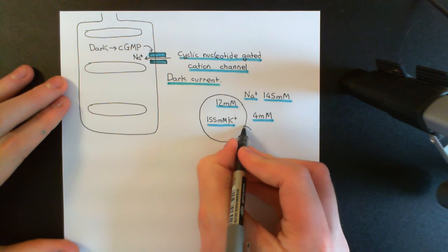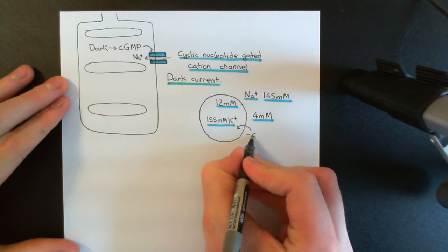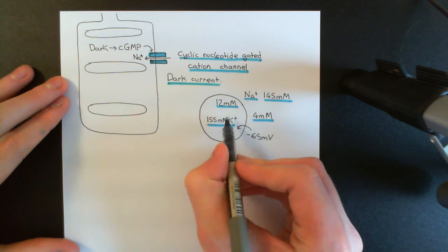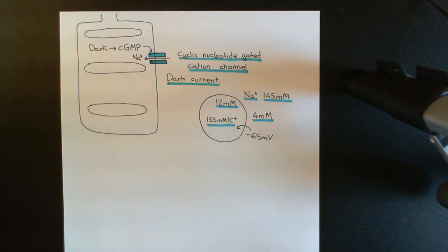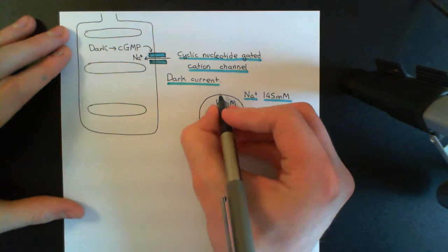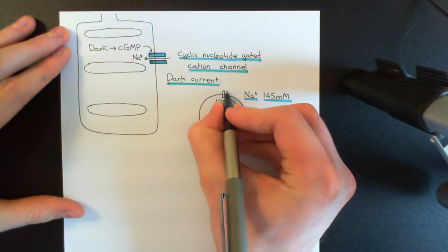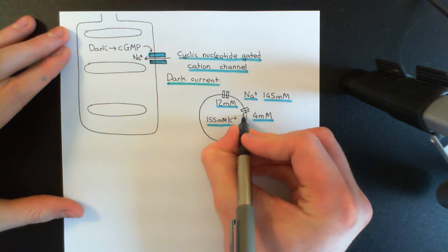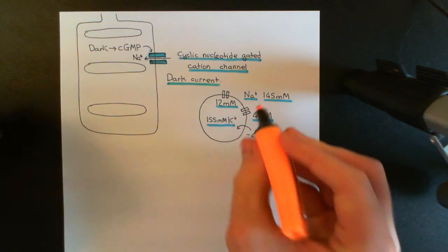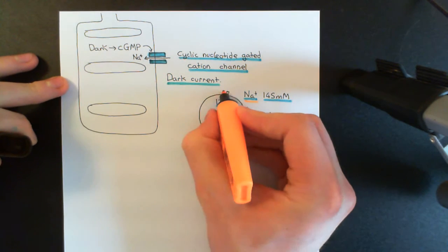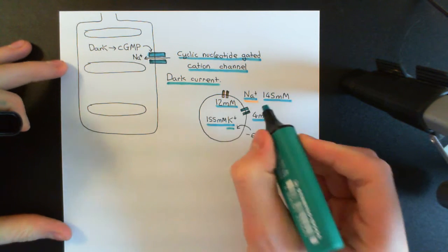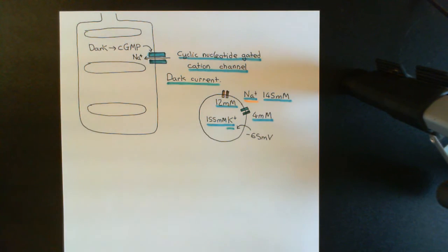At the resting electrical potential difference across the cell membrane, which is usually around negative 65 millivolts, the amount of sodium ions moving into the cell will equal the amount of potassium ions moving out of the cell. Remember that in all cells we have ion channels in the cell membrane that are always open — the so-called leaky channels — and you will have leaky sodium channels and leaky potassium channels. I'll colour in the sodium ion channels in orange, and we'll have the potassium ion channels in turquoise.